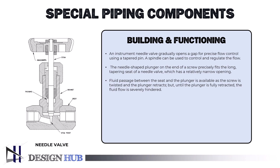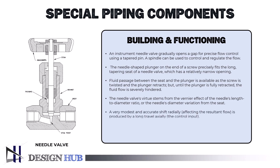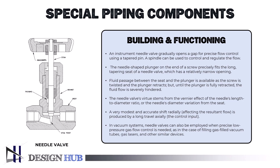Precise control over the flow rate is readily achievable because retracting the plunger requires numerous turns of the fine-threaded screw. The needle valve's virtue stems from the vernier effect of the needle's length-to-diameter ratio. A very modest and accurate shift radially, affecting the resultant flow, is produced by a long travel axially, the control input. In vacuum systems, needle valves can also be employed when precise low-pressure gas flow control is needed, as in the case of filling gas-filled vacuum tubes, gas lasers, and other similar devices.